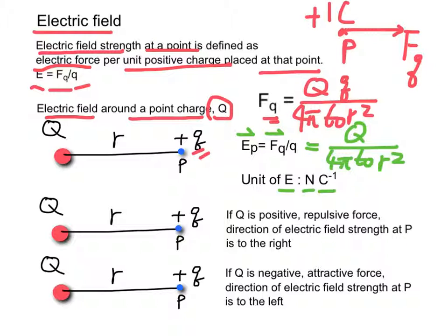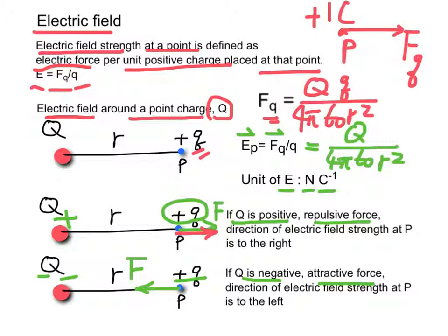Note that if Q is positive, there is a repulsive force acting on the positive charge Q. Therefore, the electric field strength at point P will be to the right. If Q is negative, we have an attractive force on the positive charge Q. Hence, the electric field strength at point P will be to the left.